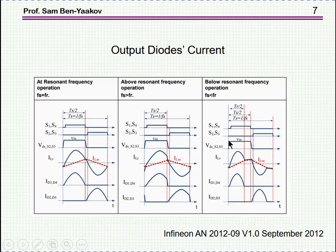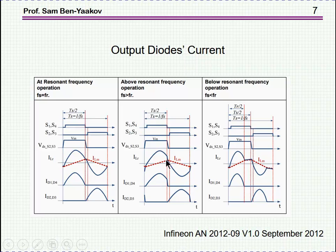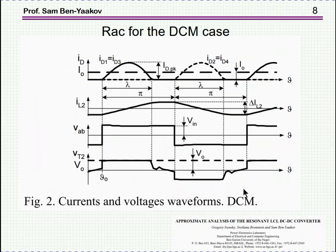Let me summarize the RAC situation. Strictly speaking, the RAC is correct for operation with the switching frequency at resonance. Above resonance it is approximately okay. However, below resonance the waveforms are quite different from what was assumed when extracting RAC. So the purpose of this work is to find what the correct RAC is in that below-resonance situation.